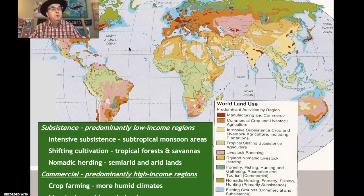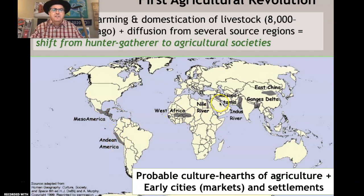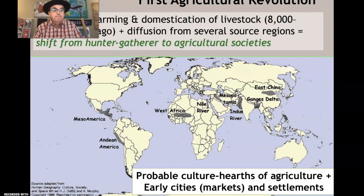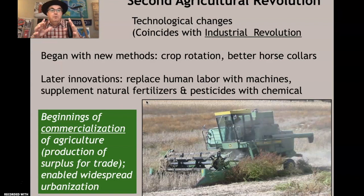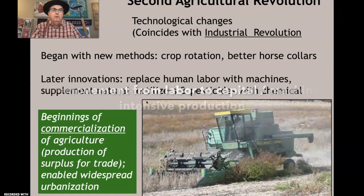There are multiple agricultural revolutions you need to know about. The first agricultural revolution relates to early cities or markets and how they developed — in each of those cultural hearths, small towns and cities would emerge in early civilizations, serving as markets. The second agricultural revolution's technology coincides with the industrial revolution. The industrial revolution, covered in the economic development unit, goes hand in hand with the second agricultural revolution — they each develop things that improve the other. The industrial revolution focuses on manufacturing but also assists in agricultural production.